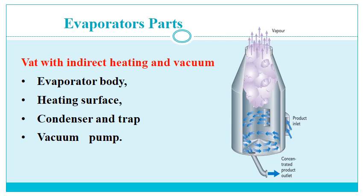The parts of a vacuum evaporator — which is most commonly used — include: the evaporator body, heating surface, condenser and trap, and vacuum pump. In the diagram, there is a place for product entry where liquid milk enters, and at the bottom is the output of concentrated milk after evaporation. Inside the body the milk gets evaporated, the steam goes up, and that vapour is condensed and taken out by the condenser and trap.